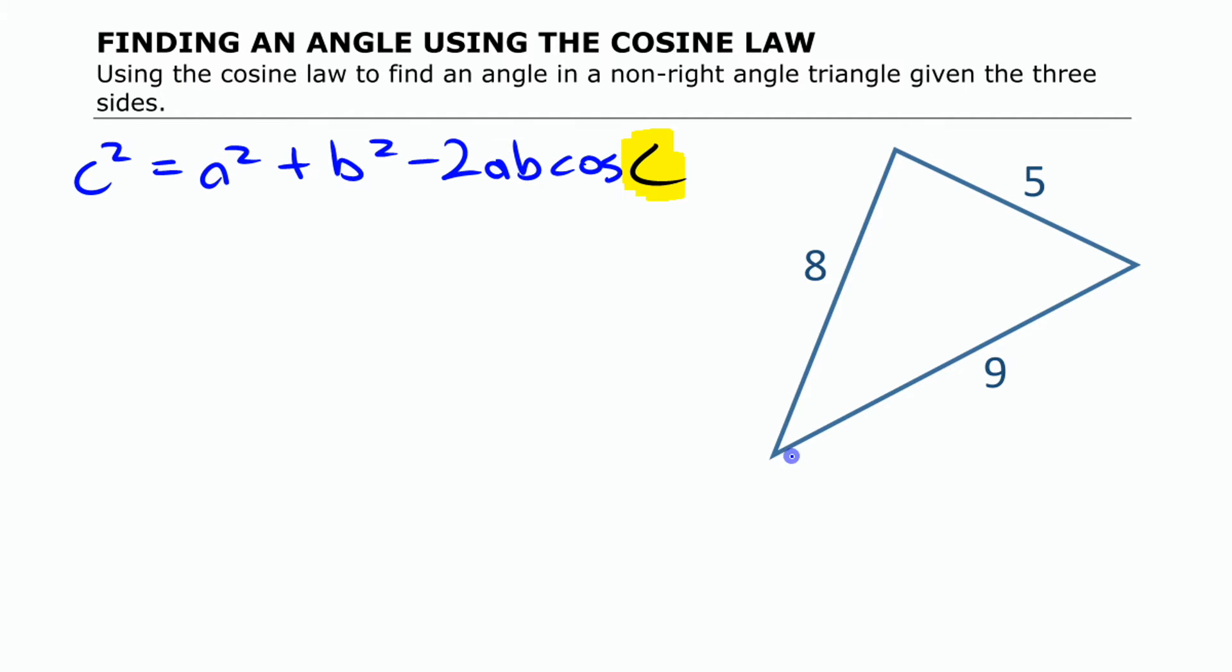If we say that this is the angle we're finding, this angle right here, if that's angle C, then the side I put over here has to be the one across from it. So this is going to be 5 squared equals 8 squared plus 9 squared minus 2 times 8 times 9 times cosine of C.